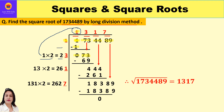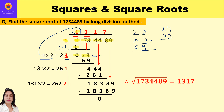Our first quotient is 1, so we double it to get 2, and leave a blank to its right. We need a digit in the blank such that multiplying the resulting number by that same digit gives a product ≤ 73. Trying 3: 23×3=69, which works. Trying 4: 24×4=96, which is more than 73. So the divisor is 23, the new quotient digit is 3, and the product is 69.